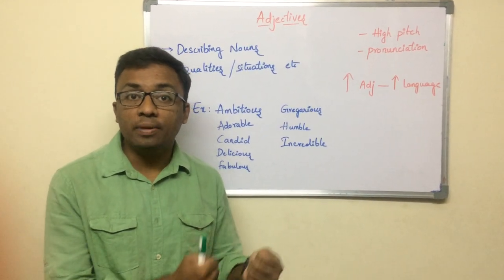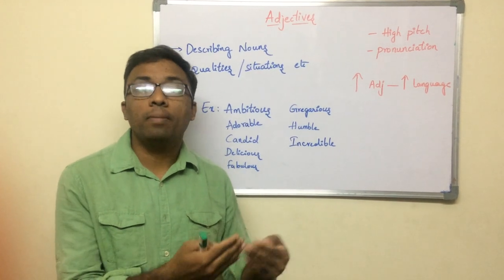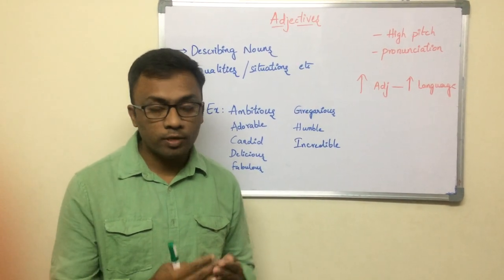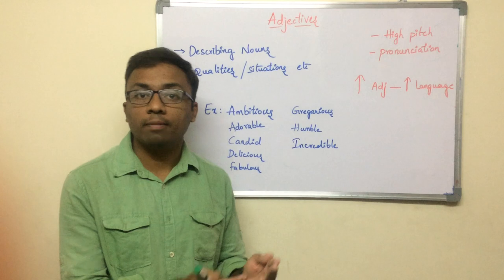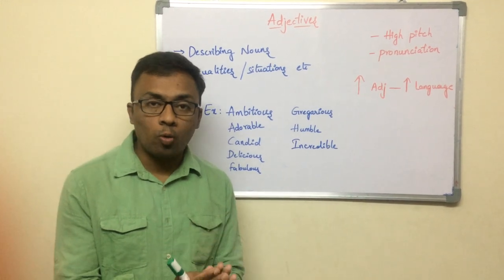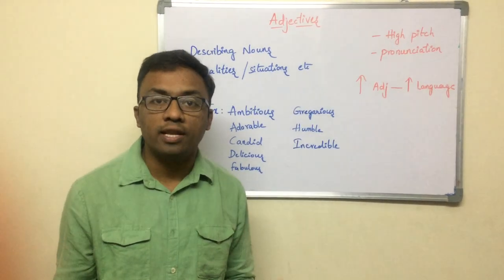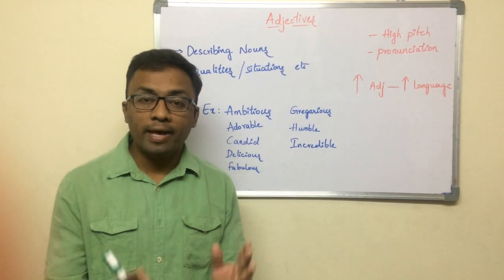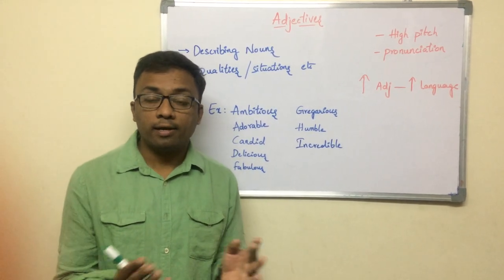For example, 'ambitious' — ambitious means having high ambitions. 'Ramu is an ambitious student' means you are giving a compliment to him. Obviously, ambitious people will only become successful. Likewise, there are so many adjectives in the English language.